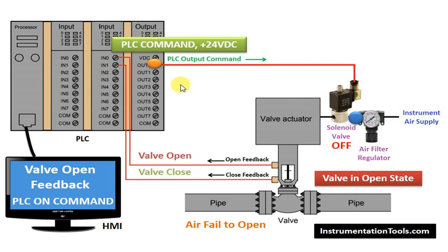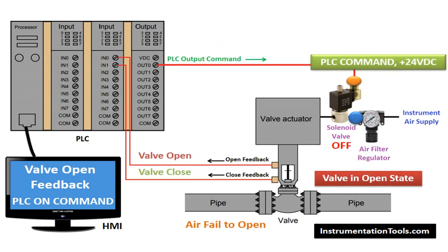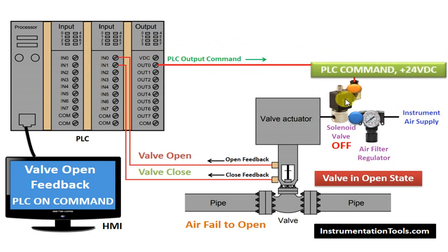PLC command is given. From the PLC digital output, the power will be sent to the SOV. From the output, the PLC command will go to the SOV. Nothing but PLC gives power supply to the SOV — in our case, 24V DC. Once 24V is received, the SOV is energized. In our example, the SOV is normally-closed type. That is why the input air is available to the SOV, but it will not send air to the valve while de-energized. Now, as the PLC has given the command, the SOV is energized and it will change state from OFF to ON.